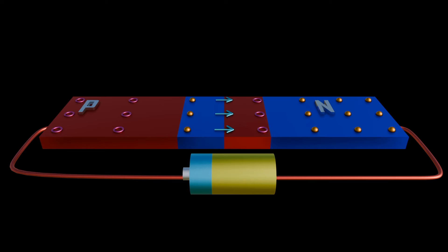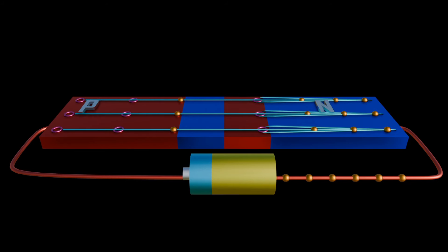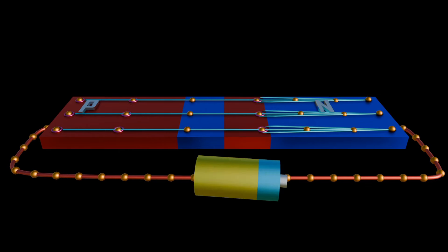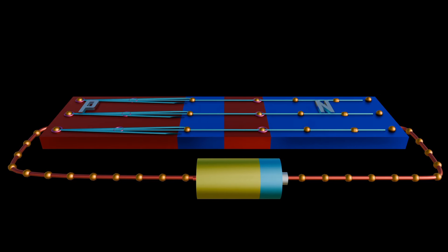Zener diode works similarly to a normal P-N junction diode when forward biased. That is, it conducts current. But when the Zener diode is reverse biased, it works on the principle of Zener effect. But first let's review how a diode works, precisely a P-N junction diode.